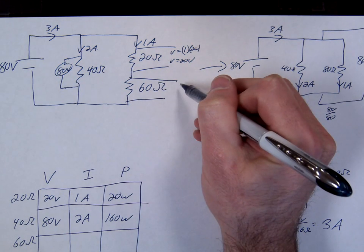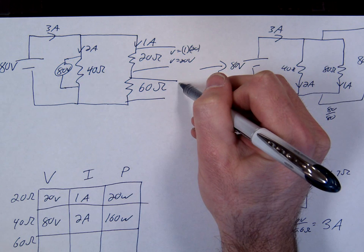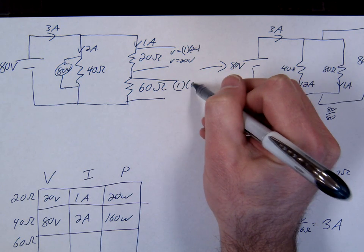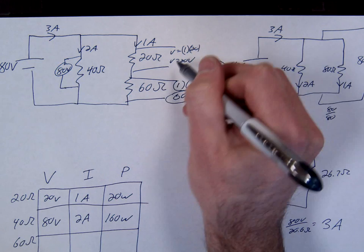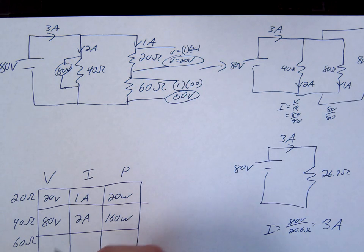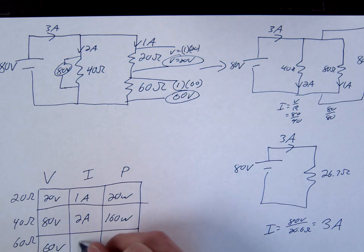V equals I times R. 1 times 60. 60 volts. 60 volts, 1 amp, 60 watts.